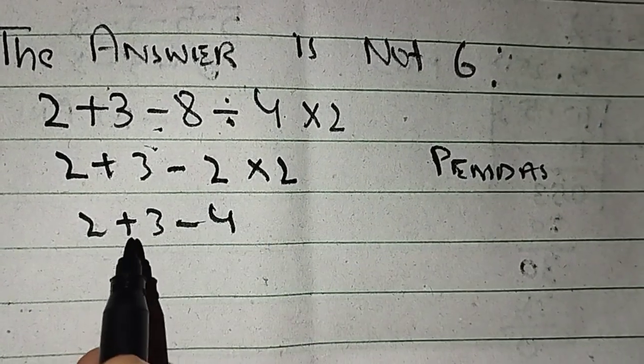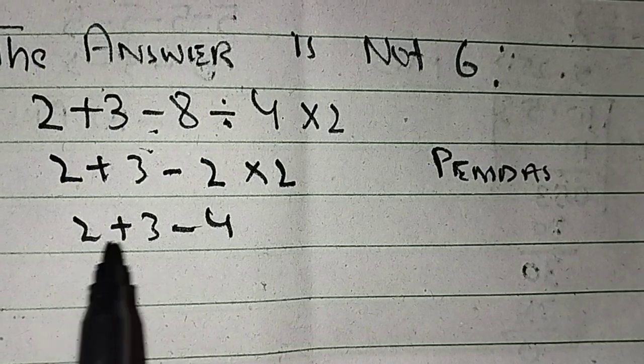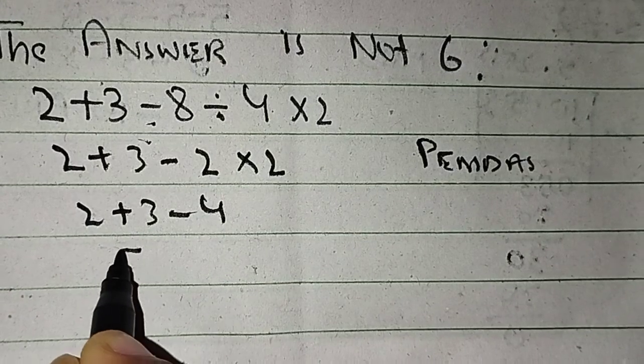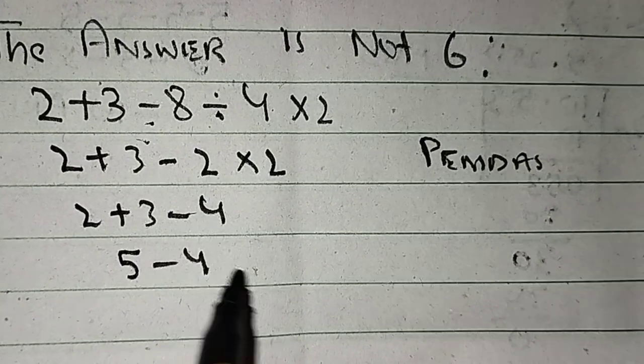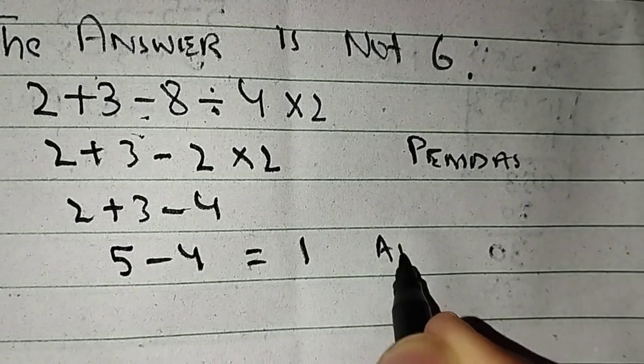Now we use left to right according to PEMDAS. 2 plus 3 equals 5 minus 4. 5 minus 4 equals 1, so 1 is the right answer.